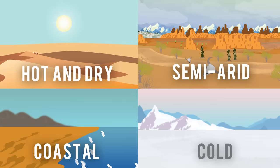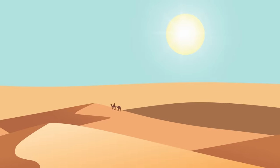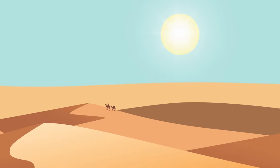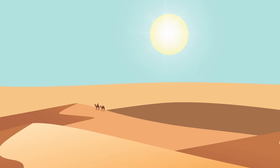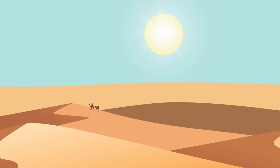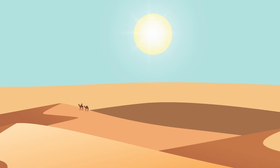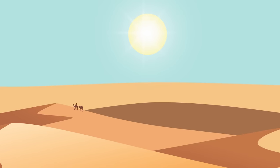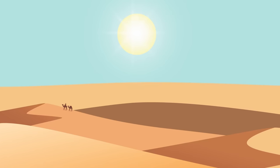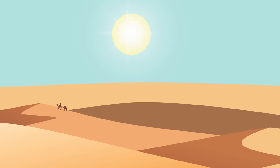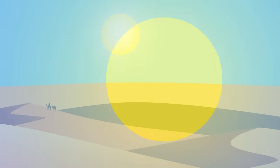The other types of deserts are semi-arid, coastal, and cold. Hot and dry deserts have high temperatures during the summer because of the low humidity to block the sun's rays. The largest hot desert is the Sahara Desert in northern Africa. The Sahara can reach temperatures of up to 122 degrees Fahrenheit or 50 degrees Celsius during the day.